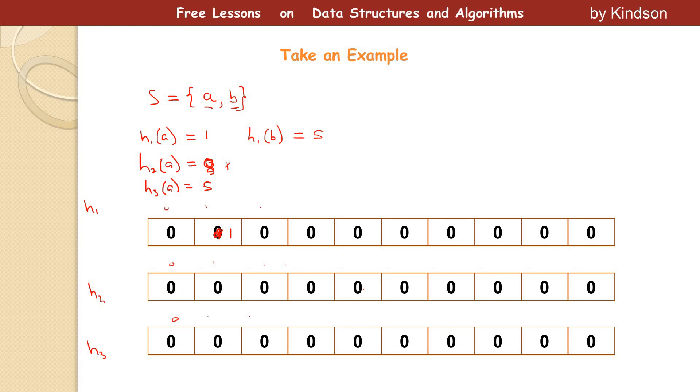One, two, three, four, five, six, seven, eight. So take out the zero and set it to one, right? H3 of A gives us five, right? So we go to H3 and position five and set it to one. Zero, one, two, three, four, five, and set it to one. So at this point, we've completed for the first element.